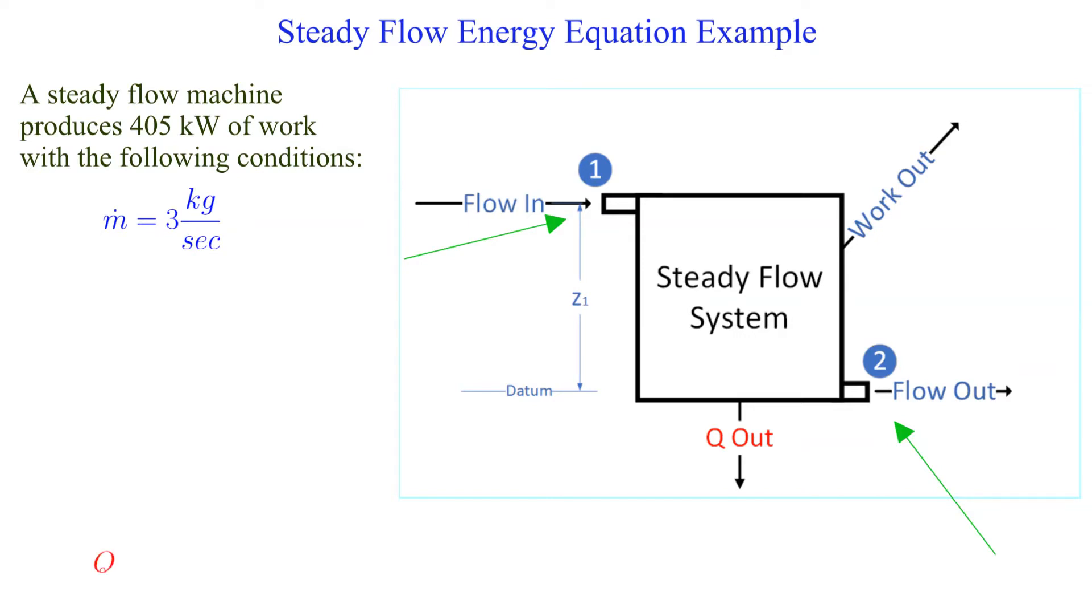Each kilogram passing through the system loses nine kilojoules of energy. The inlet elevation is 32 meters above the outlet. The remaining required inlet and outlet conditions are as shown.